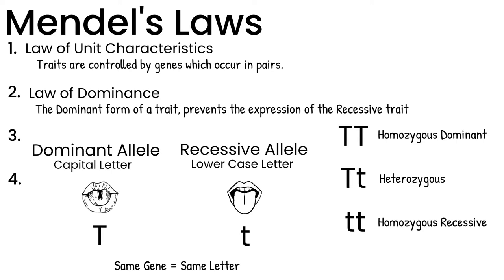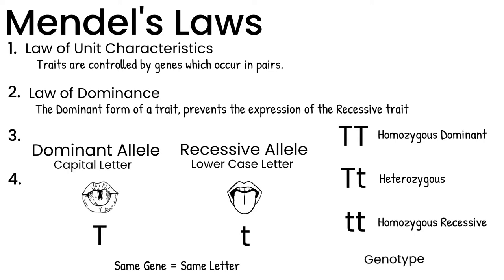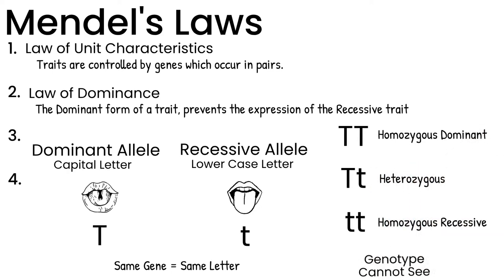These different combinations of alleles for a gene are called genotype. We can't see a person's genotype just by looking at them — we have to either test a person's DNA or track traits for multiple generations, like Mendel did.